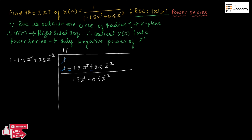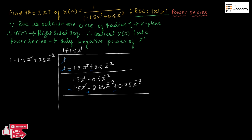Now let us take 1.5 Z inverse times the denominator. This gives 1.5 Z inverse minus 2.25 Z to the power of minus 2 plus 0.75 Z to the power of minus 3. If we subtract this value and cancel, we are left with 1.75 Z to the power of minus 2 minus 0.75 Z to the power of minus 3.